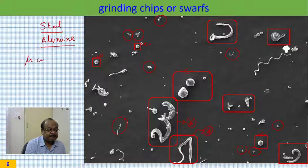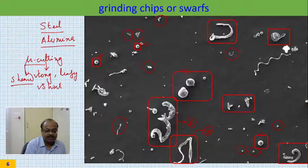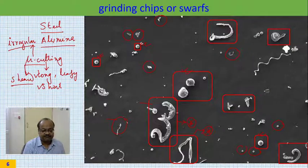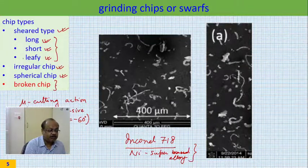Micro cutting by abrasive grits produces shear type chips, which can be long, leafy, or short. Irregular chips form primarily because of chip breaking, as seen in the video. What we have not yet explained is how spherical chips form. We also have not shown leafy chips and broken chips. So let us go to the next figure and see whether we can identify other chip types.